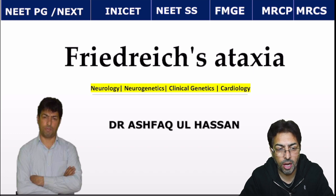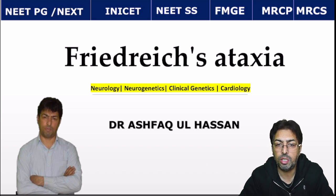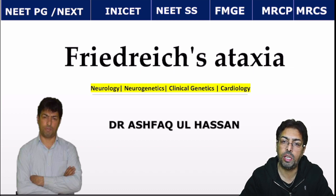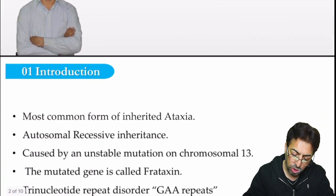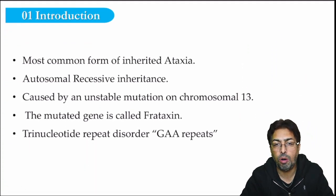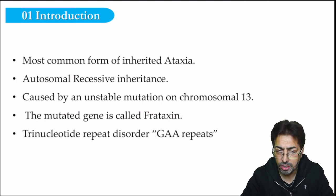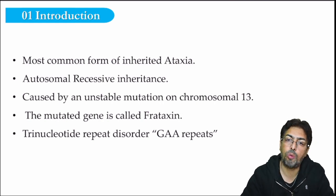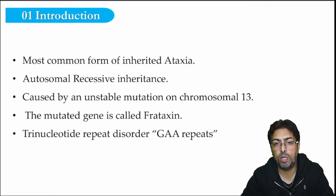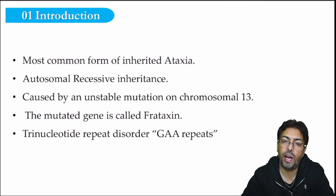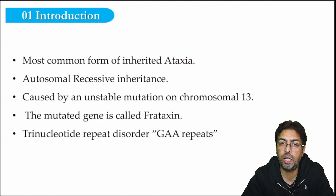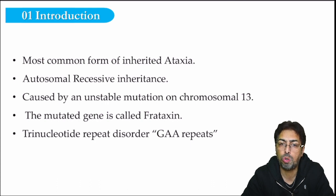As far as ataxias are concerned, there are multiple types. The most prominent are the cerebellar ataxias, the spinocerebellar ataxias, ataxia telangiectasia, and Friedreich's ataxia. Today's topic is Friedreich's ataxia. Many of these ataxias are transmitted genetically in the form of multiple triads. Friedreich's ataxia is one of the most common inherited forms of ataxia and follows an autosomal recessive pattern of inheritance.